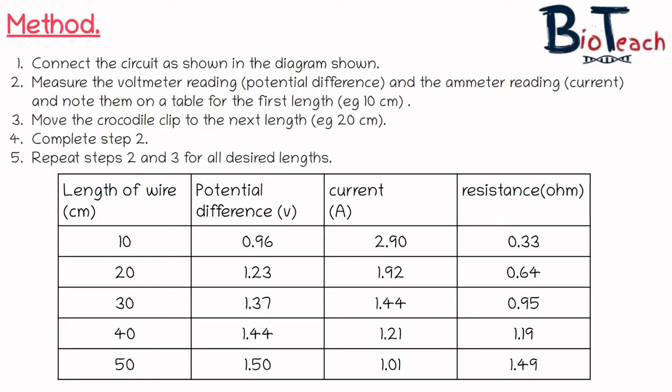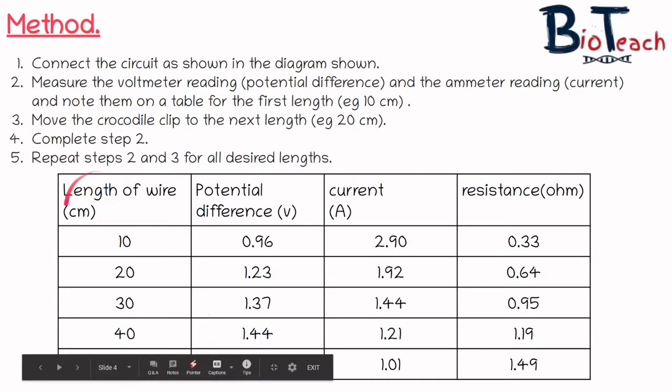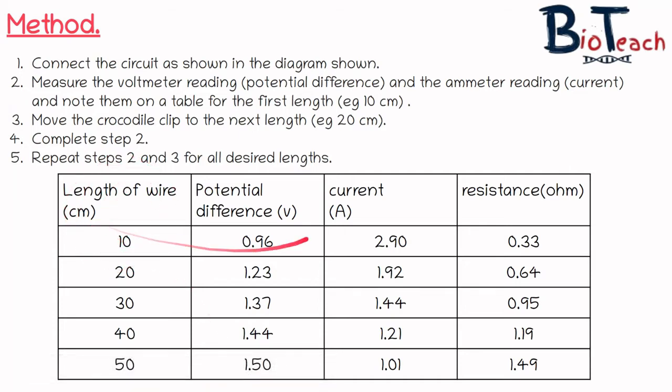In step two, measure the voltmeter reading (potential difference) and the ammeter reading (current) and note them on a table for the first length. So my first length was, for example, 10 centimeters and I've created a table showing the length of the wire. I've noted down the potential difference using my voltmeter. I've also noted down my current which I've taken from the ammeter, and then by doing a calculation between these two figures I can work out what the resistance is.